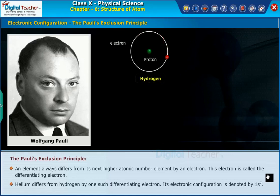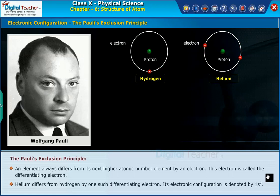Helium differs from hydrogen by one such differentiating electron. Its electronic configuration is denoted by 1s².